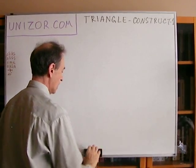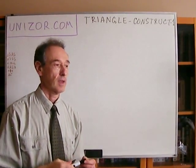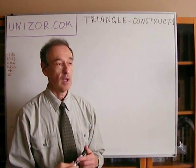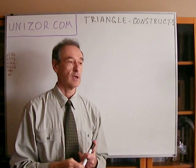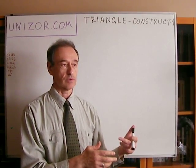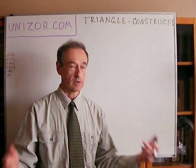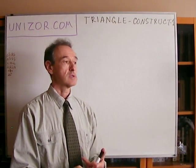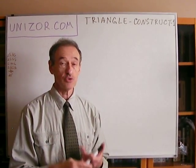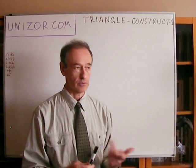The next problem: construct a triangle by three sides. In this case it's not an axiom but a theorem — if one triangle has three sides congruent to three sides of another triangle, then the triangles are congruent. This means we can uniquely construct a triangle by three sides.